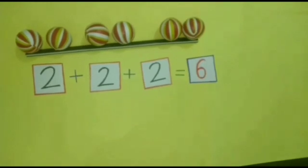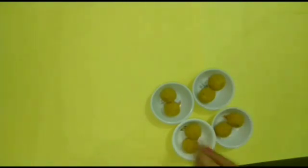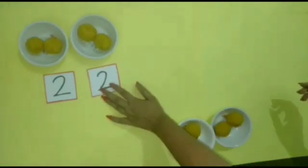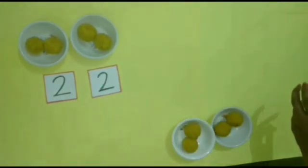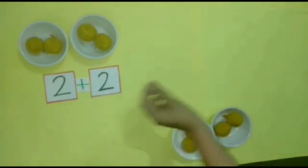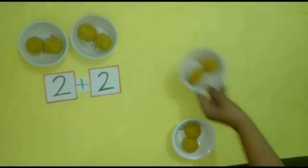Then they saw laddus in the fair. Four children bought two laddus each. The first child bought two laddus. The second one also bought two laddus. So, two plus two — how many laddus? Yes, four laddus.